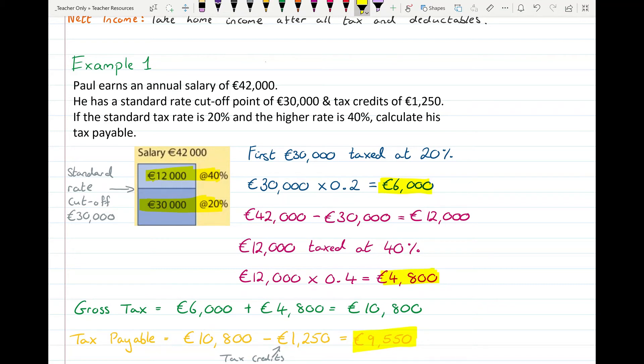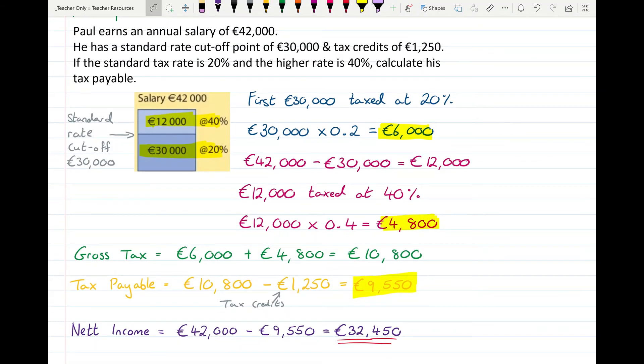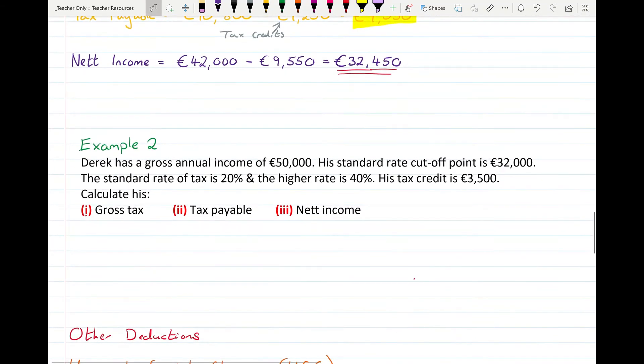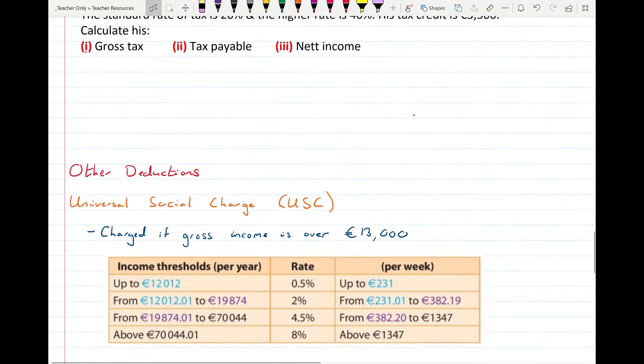Which leaves him a total tax bill to pay of €9,550. To find out how much money he gets to bring home with him, his net income, we're going to take that €9,550 away from his salary. And his salary that he earned was €42,000. So €42,000 take away €9,550 means he gets a net income, a home income that he brings home, €32,450. And that's how income tax works. There's a second example here that you can have a go at yourself. And I'll have these completed up on the notes that you can compare it to. But first, quickly, I want to talk about some other deductions.